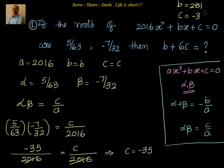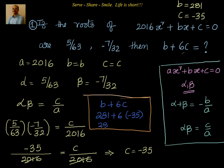So what we have to find out is b + 6c. We can do that pretty straightforward now. We will do it here only. We will write down b + 6c = 281 + 6 × (-35). That's equal to 281 - 210. That's equal to 71. So b + 6c = 71.